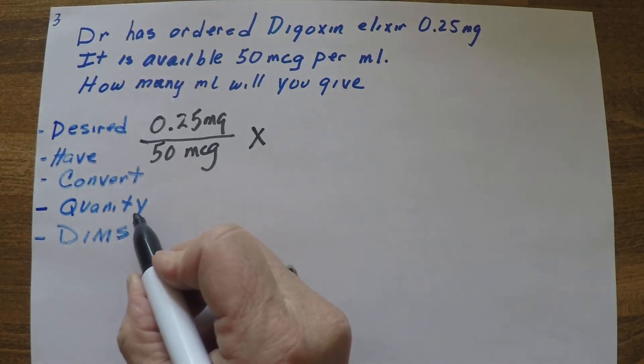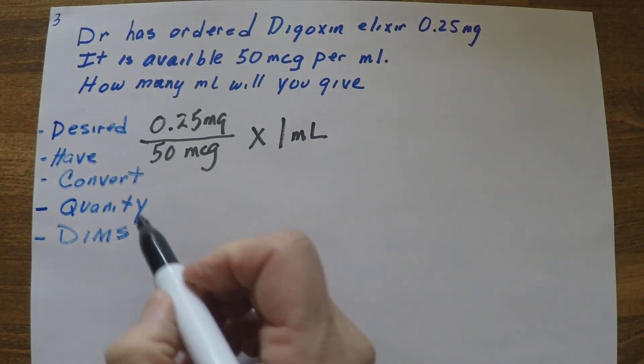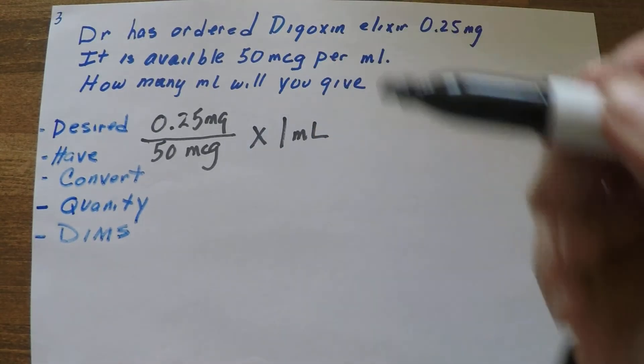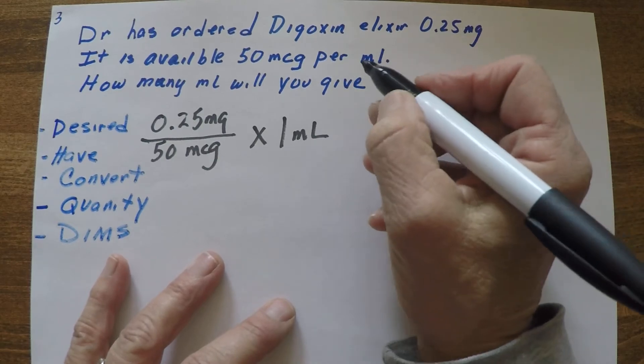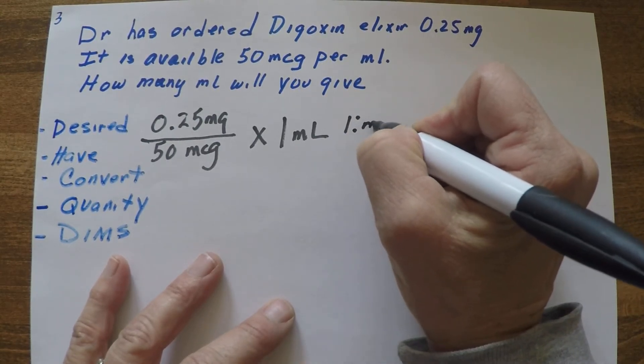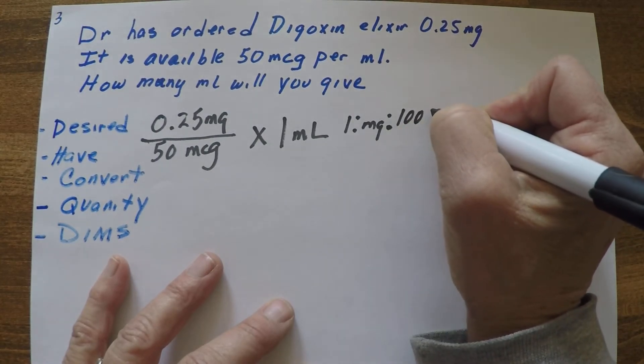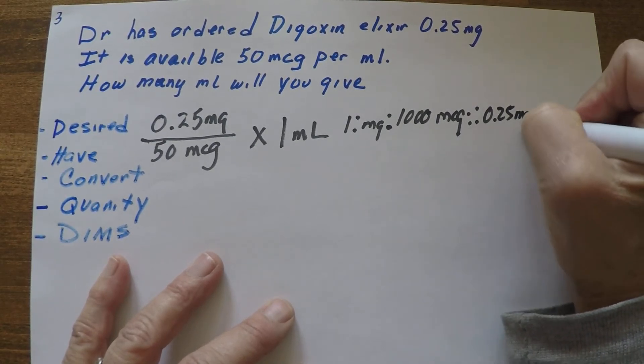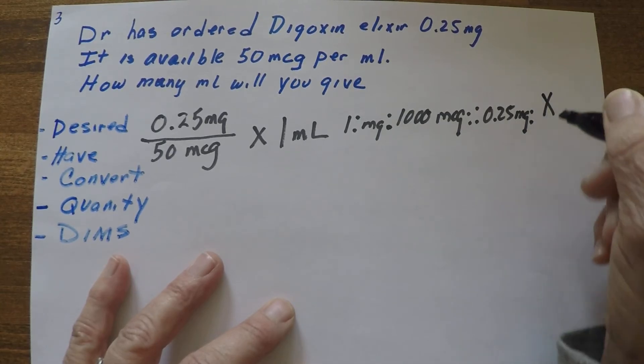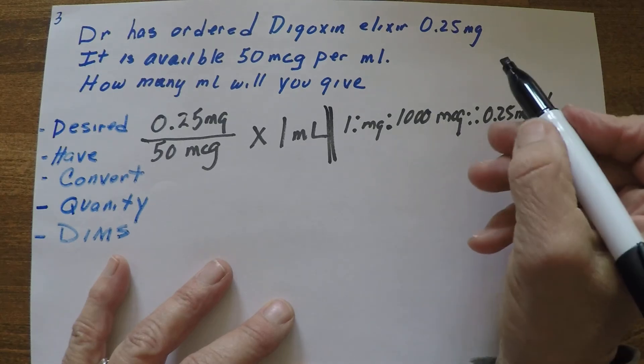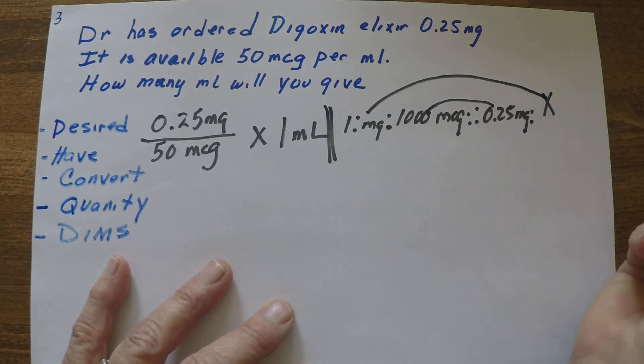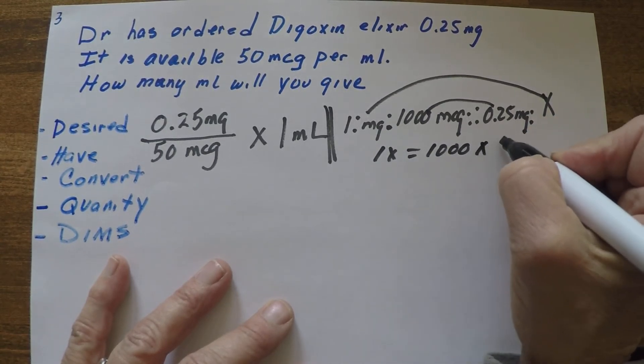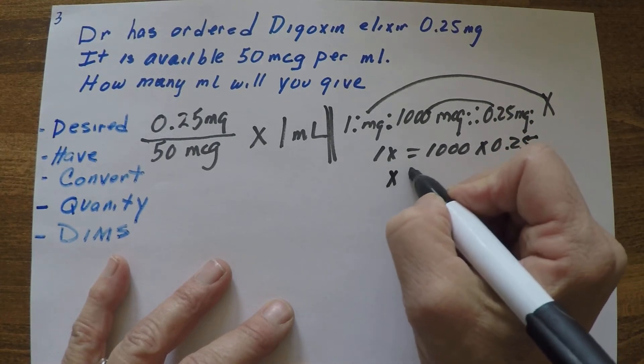So we need to convert. If we have mics available, we're going to want to turn this into mics so that we know what we're giving. So we can do ratio again. One milligram is to a thousand mics as 0.25 milligrams is to X mics. So again we're going to multiply the outsides and the insides, rainbow it. So 1X equals 1,000 times 0.25 and X equals 250.